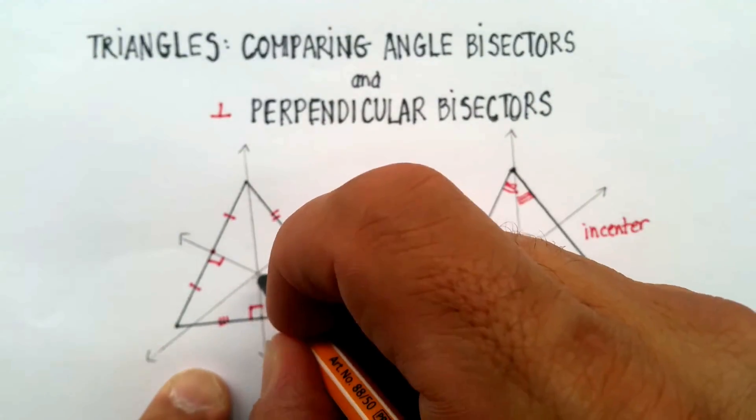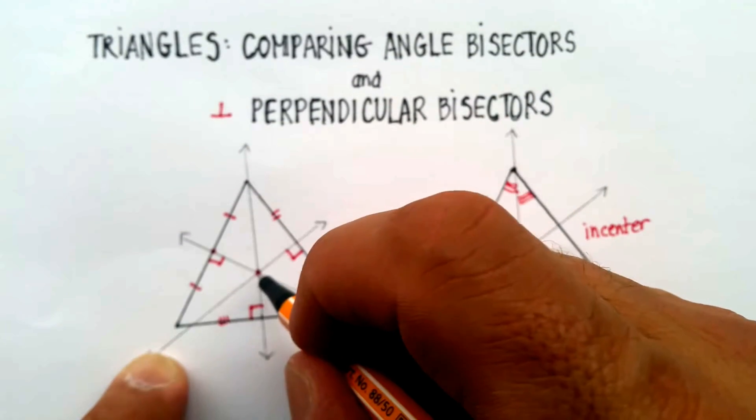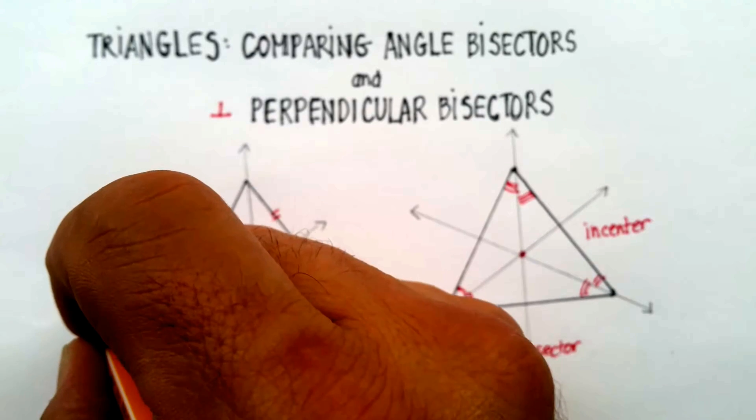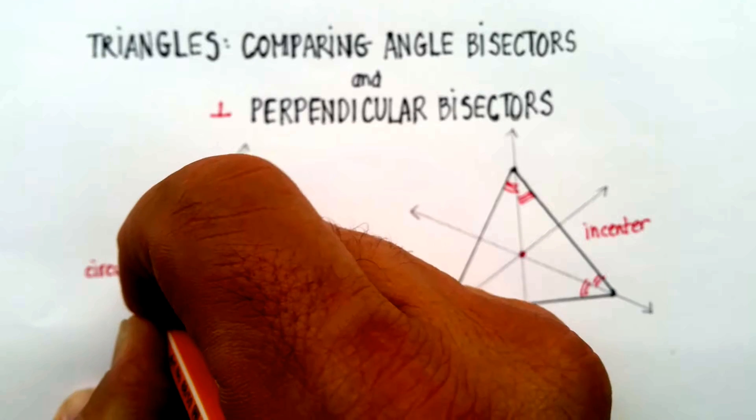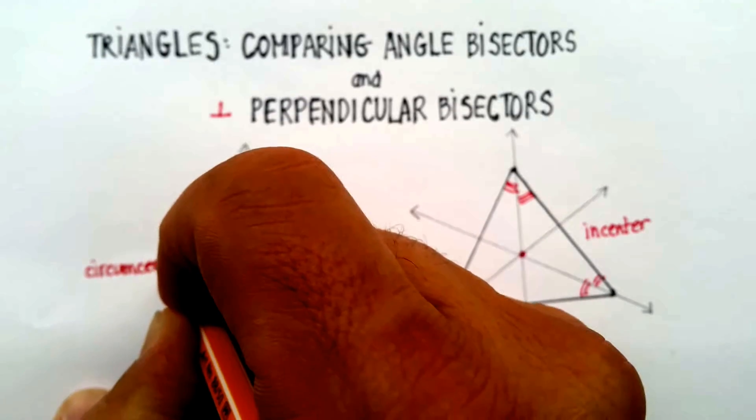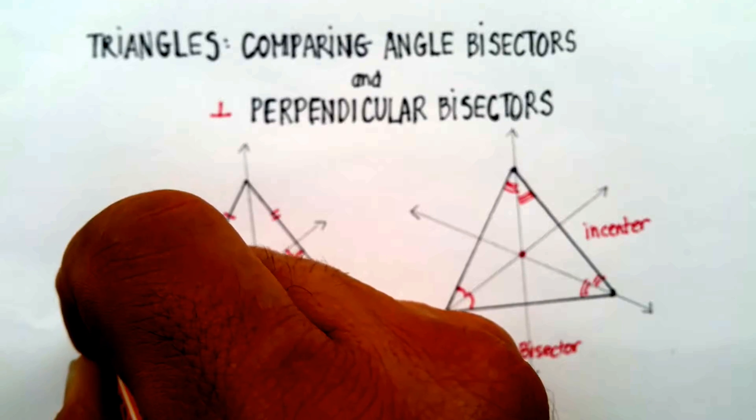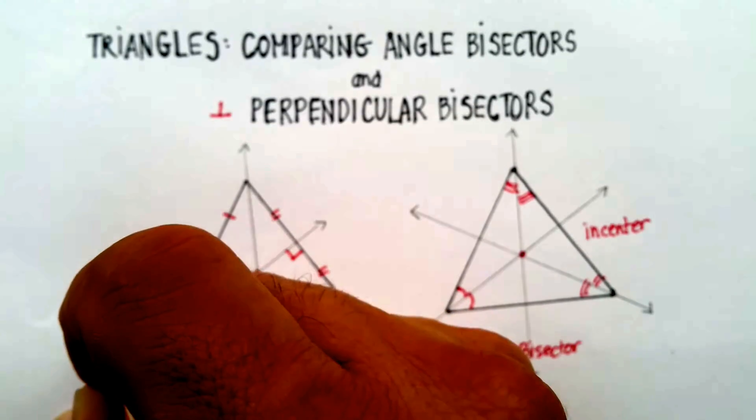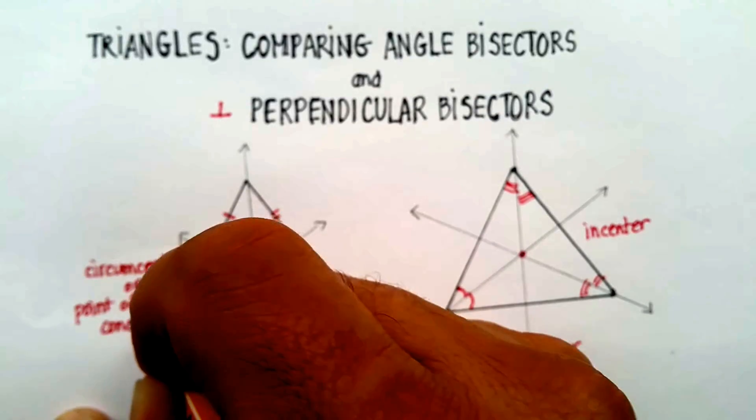Now, the difference here is that this, where the perpendicular bisectors all meet, is called the circumcenter, or the point of concurrency.